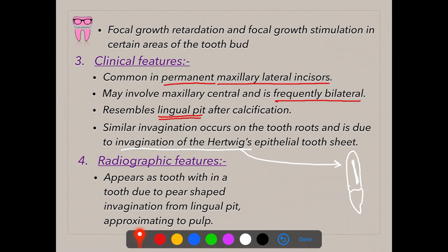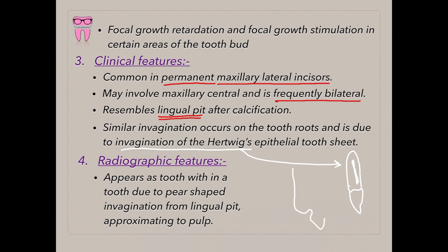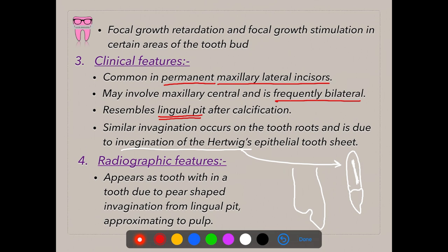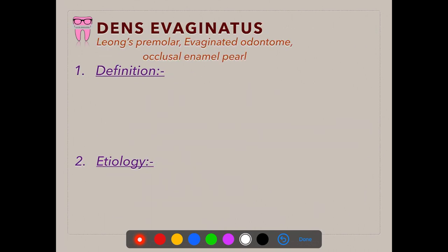Radiographically, dens invaginatus appears as a tooth within a tooth due to a pear-shaped invagination from the lingual pit approximating the pulp. On the radiograph, this area appears as another tooth present within the tooth — that is why it is known as dens in dente, meaning tooth within a tooth. However, this is considered a misnomer; it is actually an inward depression or inward growth on the tooth.